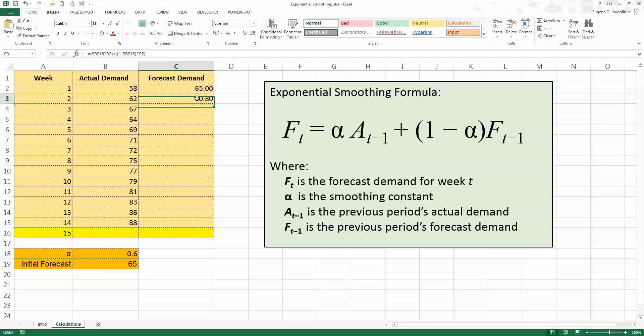I still get the same result here, but now I can copy my values down to week 14. So I've now got forecasted demand for each of the weeks to match my actual demand. So each forecasted demand has an effect on the following forecast.